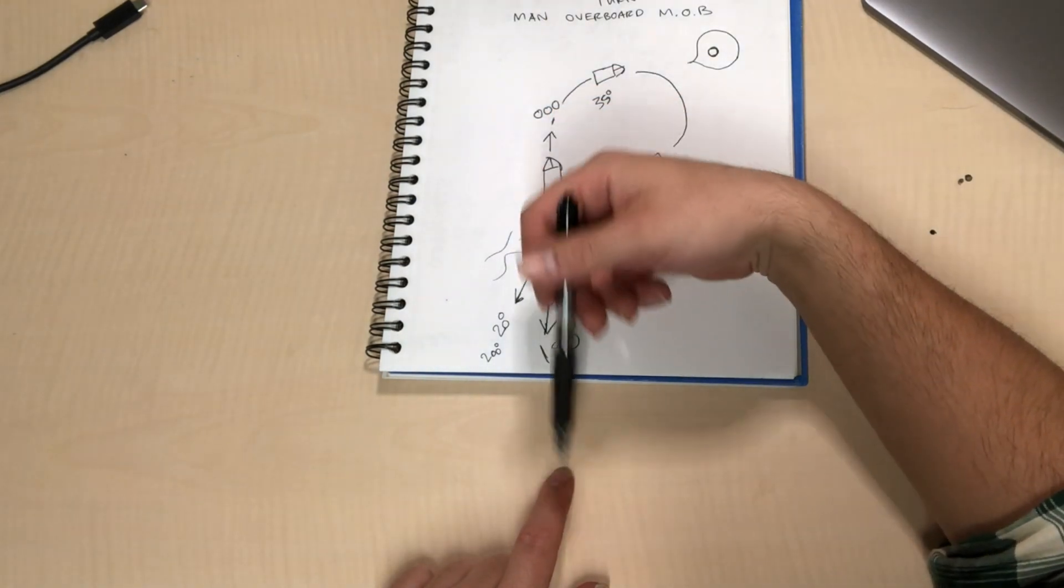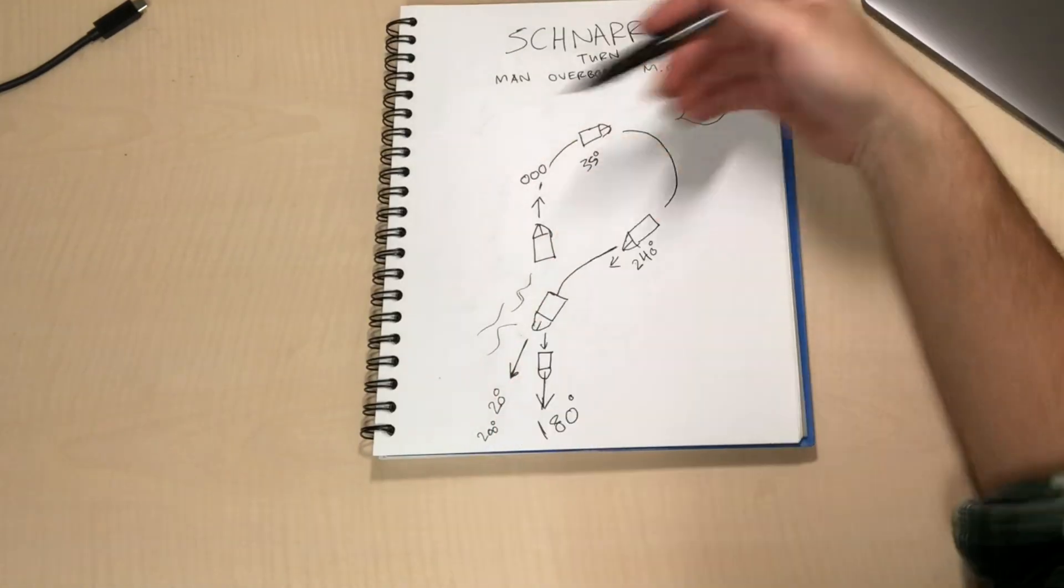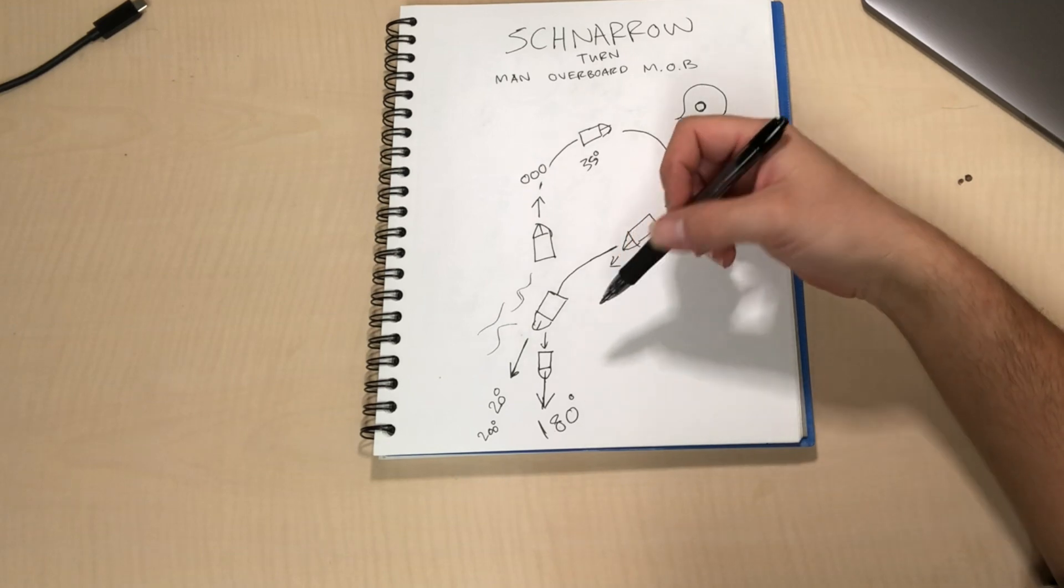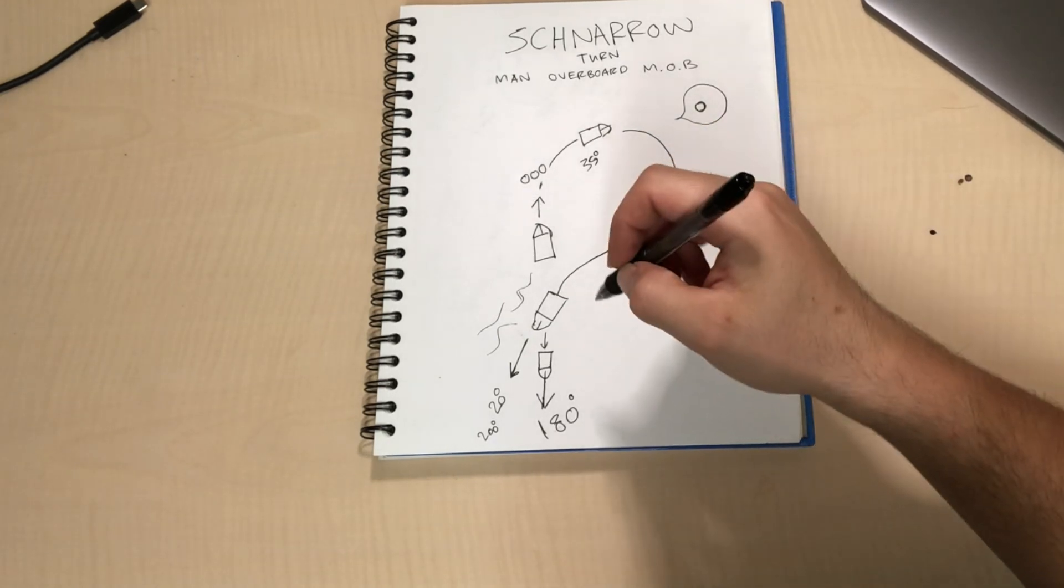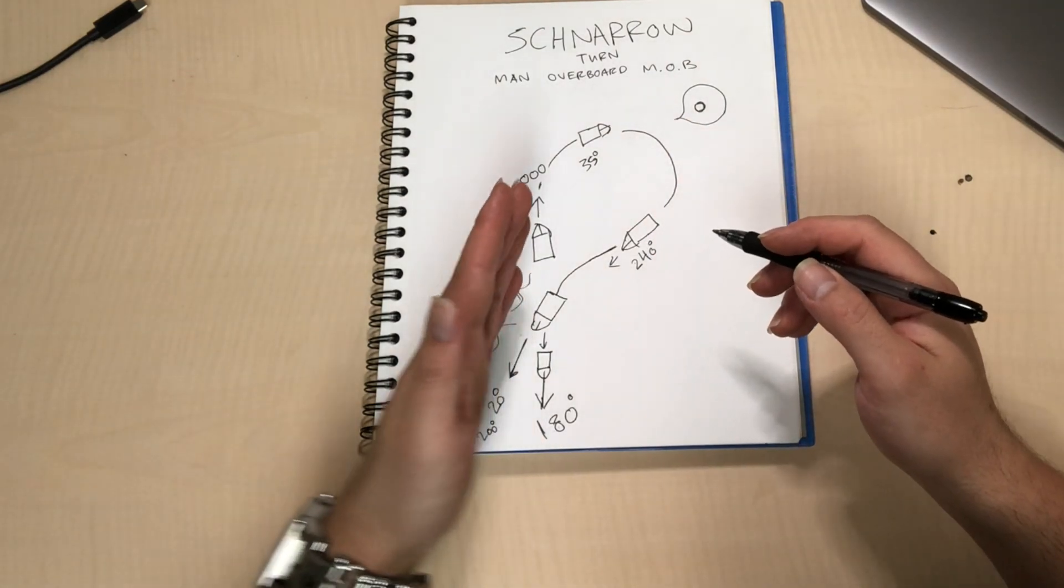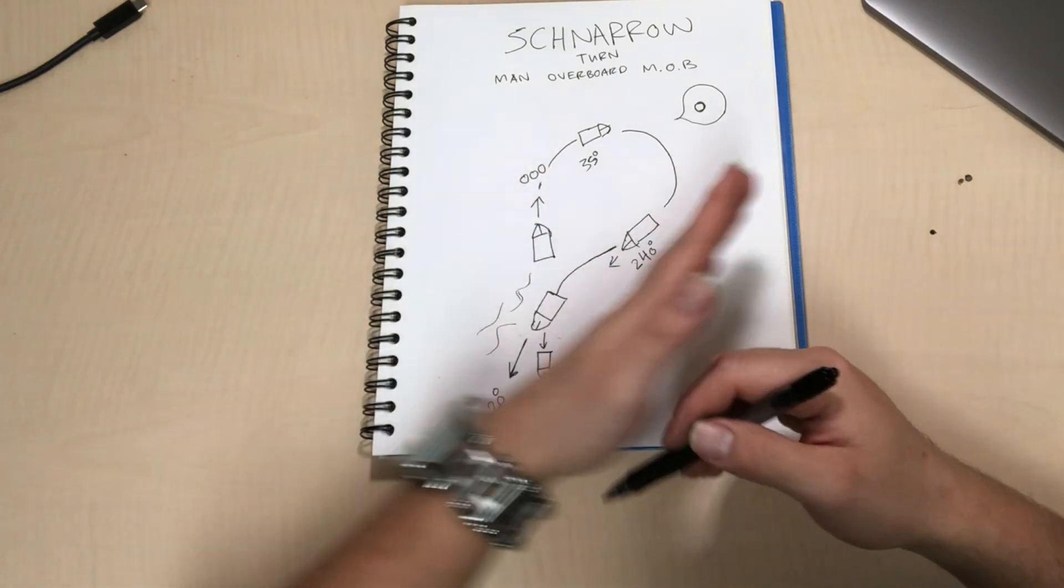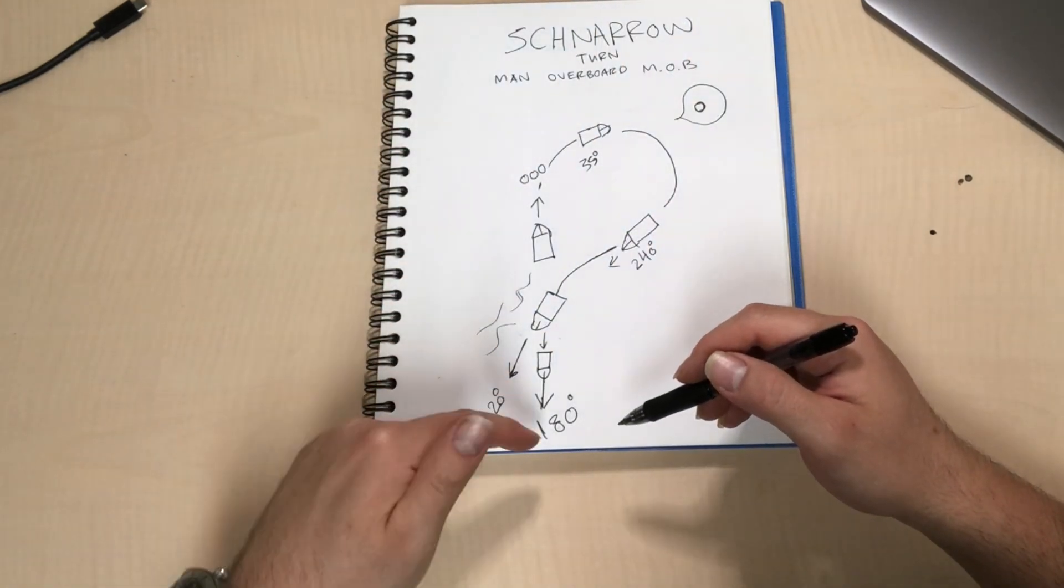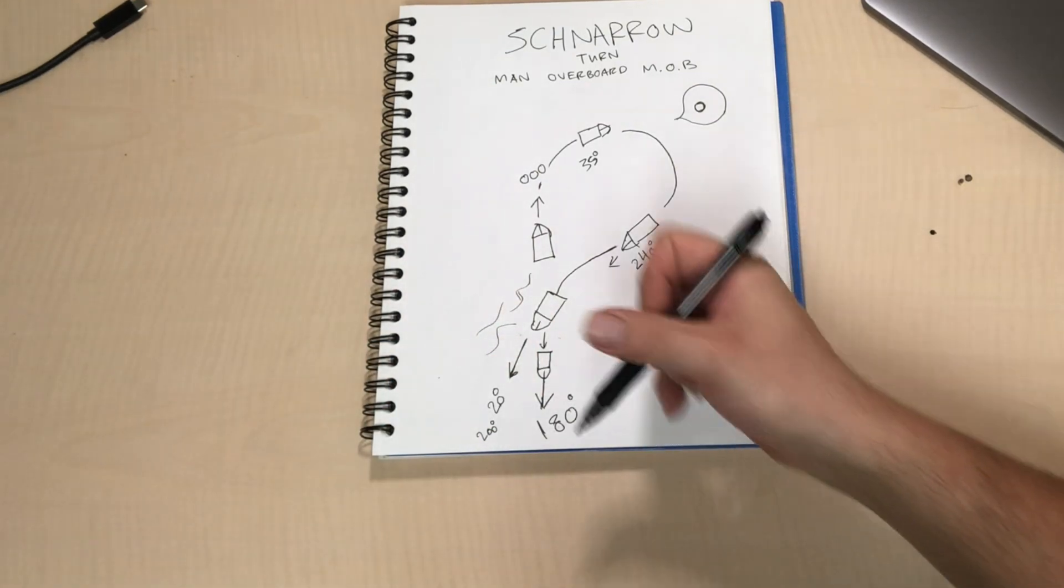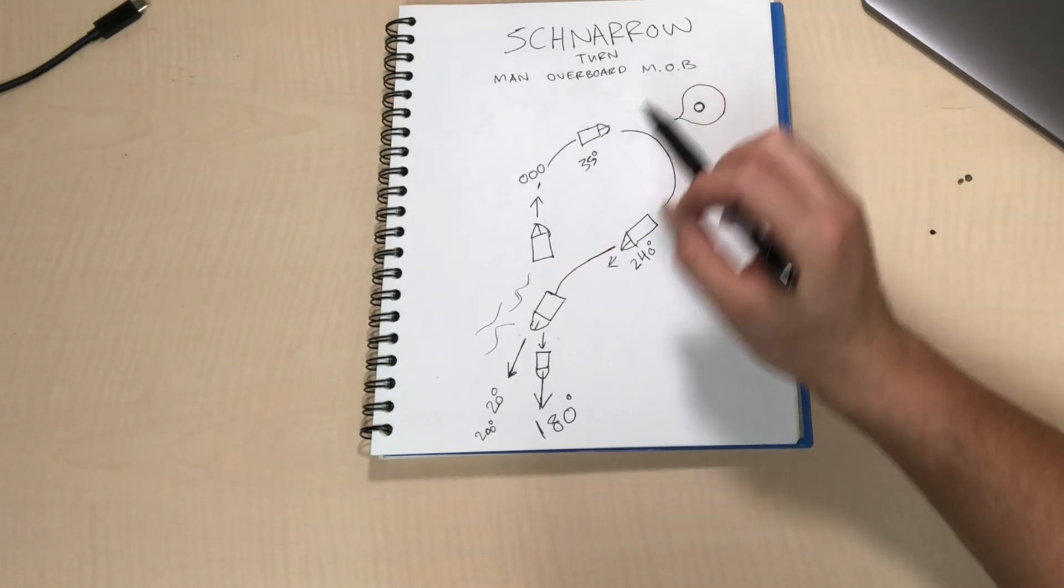Where the Williamson turn, which is the exact opposite of this, basically if you have a guy go over immediately, your point is to kick the rudder out away from your guy just in case, and then loop back around to the reciprocal course. It's also good for if you have no idea when he fell over.